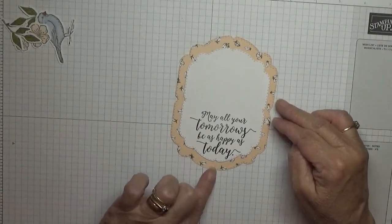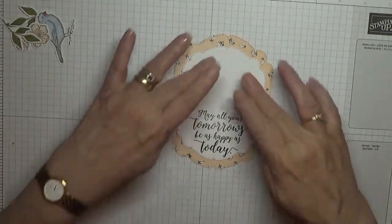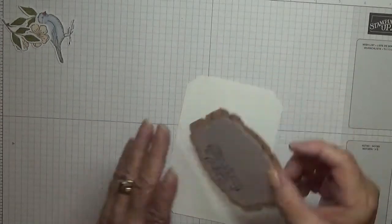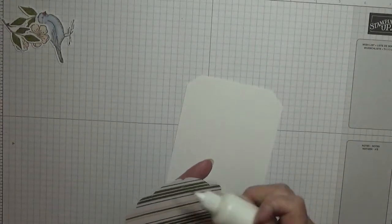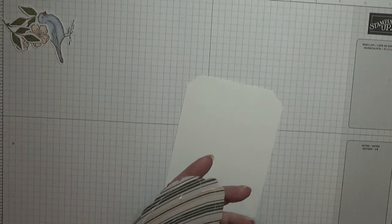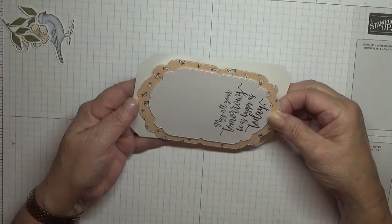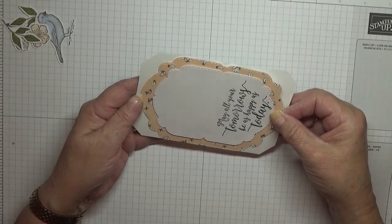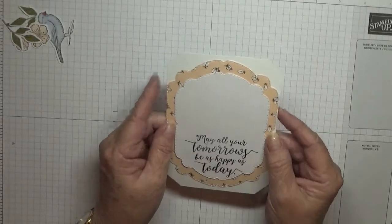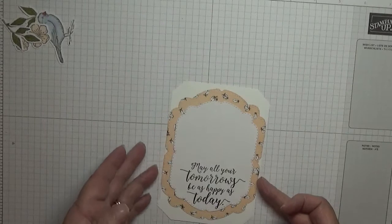This is quite easy to line up because you've got the notches here and here, so you know they're quite easy to line up. And then this will go on there. That just fits on that five by five and five eighths piece, either side.